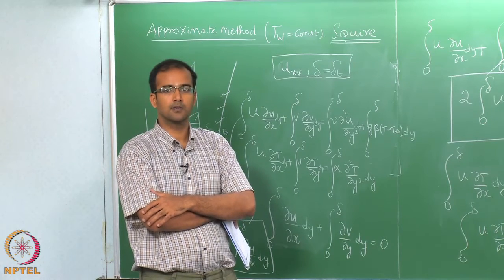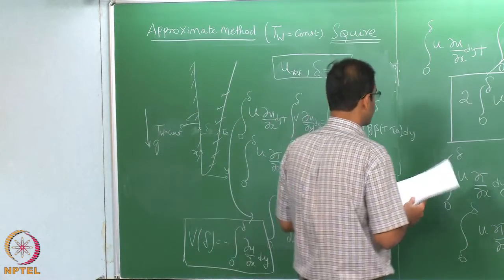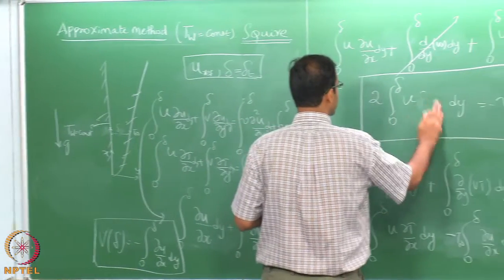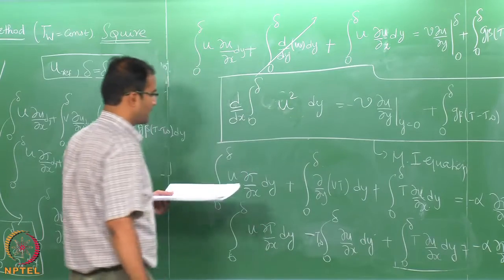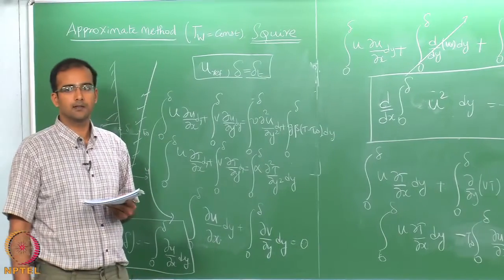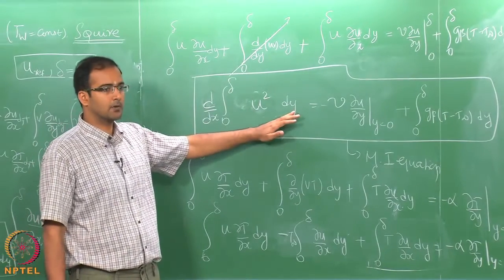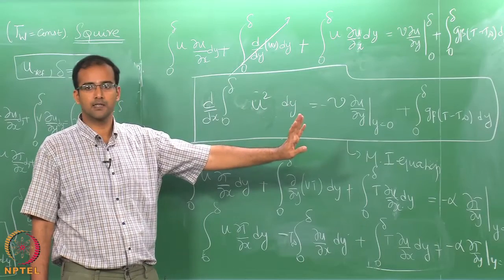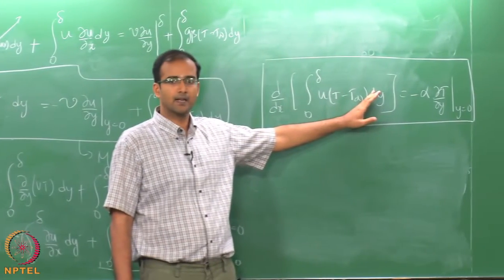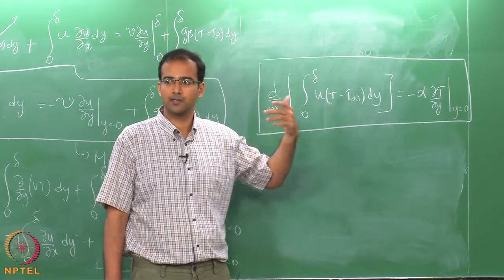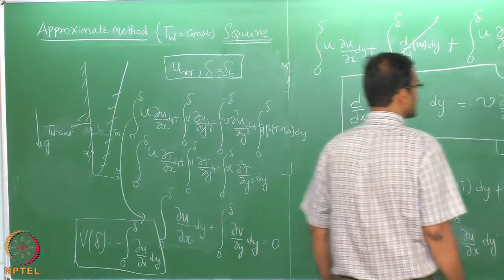The energy integral remains the same as in forced convection, but the momentum integral now has a buoyancy term. You can write the momentum integral as d/dx of integral of u² dy, which equals 2u du/dx. Once you substitute the approximate velocity profile, this becomes an ordinary differential equation with respect to x. Similarly, substituting the approximate temperature profile and integrating gives another ODE. You get two equations and two unknowns: the reference velocity and delta.